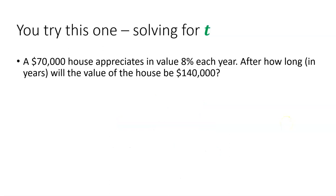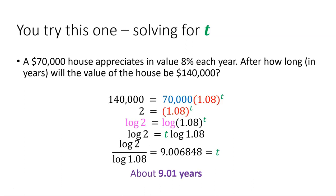You try this one. A $70,000 house appreciates in value at 8% each year. So after how long will the value of the house be $140,000 or doubled in value? Please pause the video and try this problem. And here's the work. The answer is about 9.01 years, very close to just 9 years. And see if your work looks like this. That's how you can solve this problem.